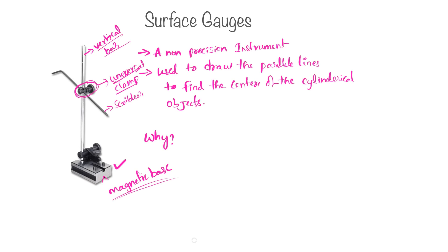And this surface gauge will be used along with V block to scribble the parallel lines. This gauge will give more precise measurements when we use it with a dial indicator.